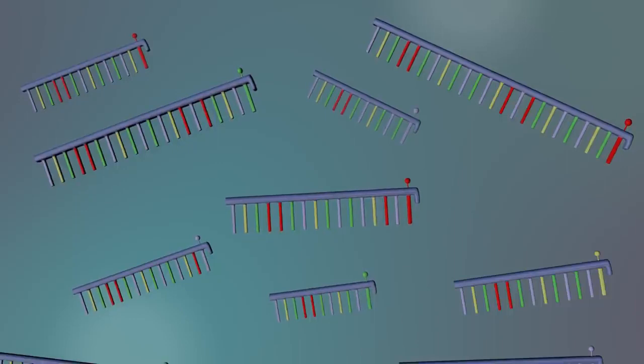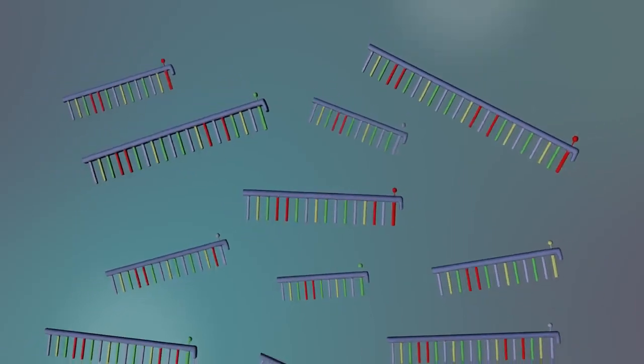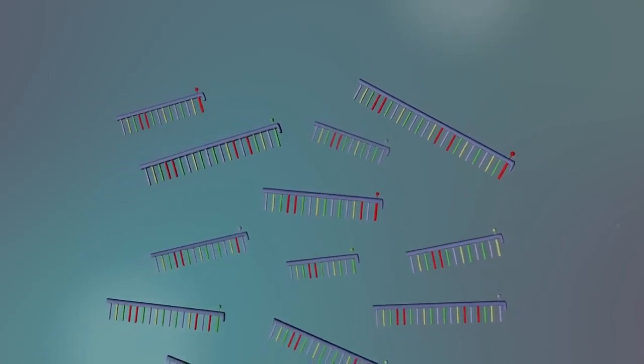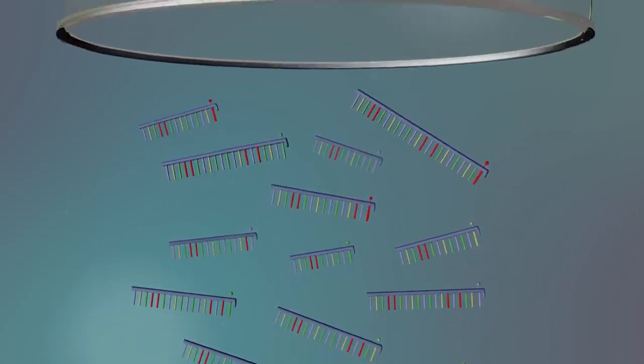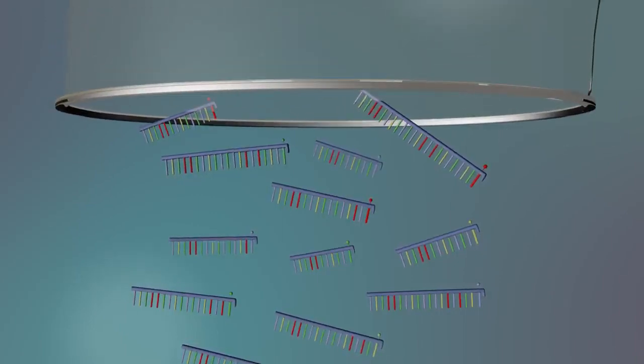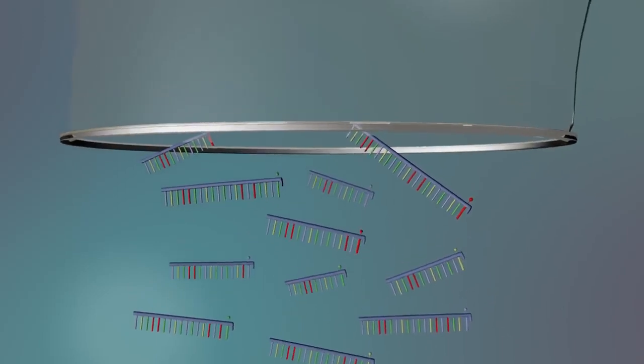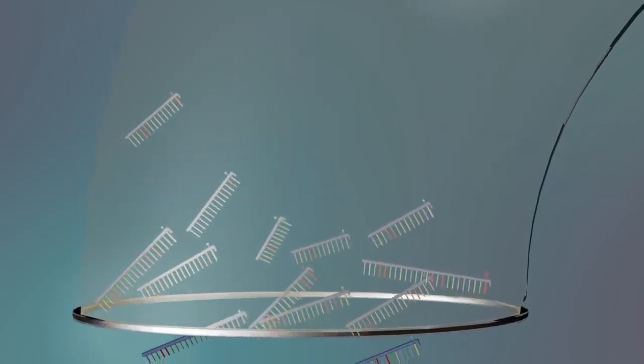To read the sequence of the DNA, the various fragments are separated by length using a process called electrophoresis. A capillary tube is lowered into each well of the plate and an electrical charge is applied. This causes the negatively charged DNA molecules to move through the capillary tube.